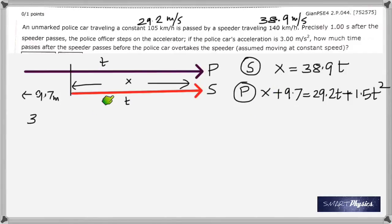That's why I put that that way. So now in place of this x you can substitute 38.9 times t.